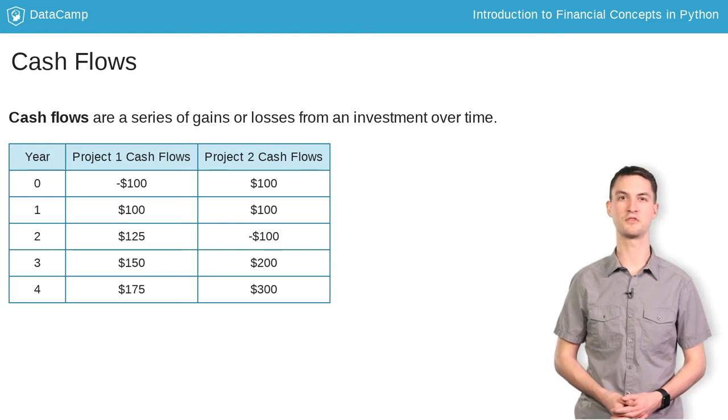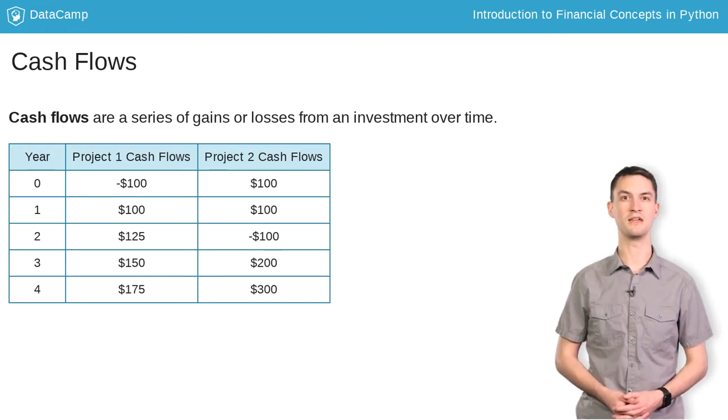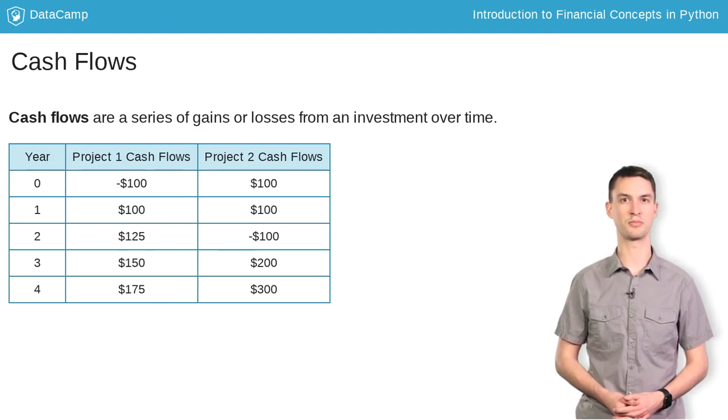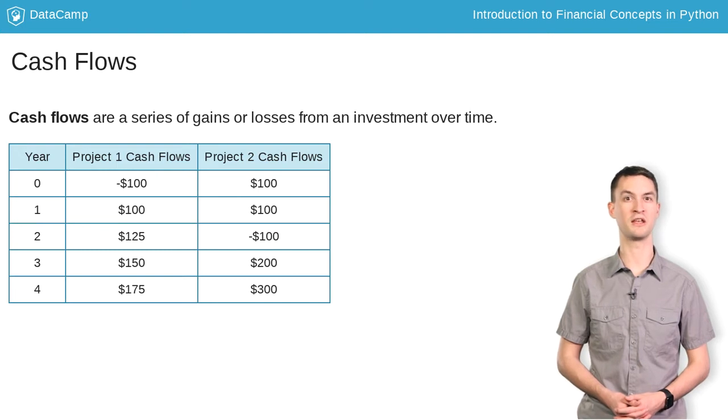You might think of summing the cash flows, but you really can't do that. Each cash flow is generated at a different time. You will need to convert each cash flow to either present or future value before doing any comparisons.